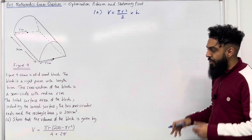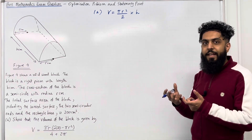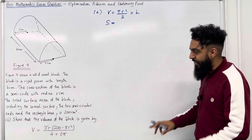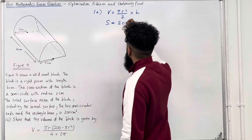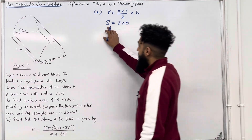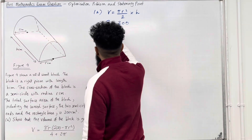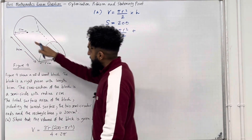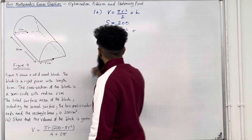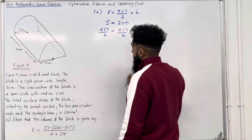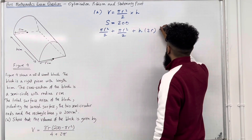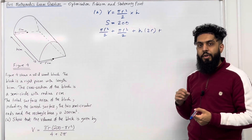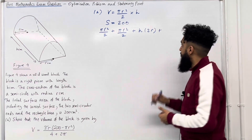My second formula is linked to the surface area. Let S denote the surface area of the solid wood block, and we know that S equals 200 centimetres squared. S consists of two semicircles: pi r squared over 2 plus pi r squared over 2, plus the rectangular base, which has width 2r multiplied by length h, plus the curved area. For a full cylinder the curved area is 2 pi r h, so for half a cylinder it is pi r h.